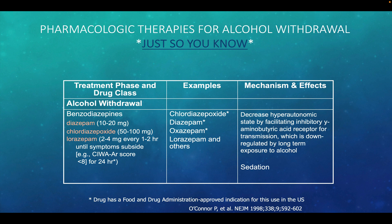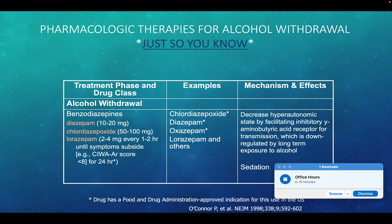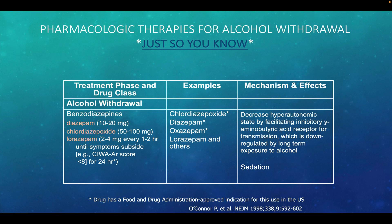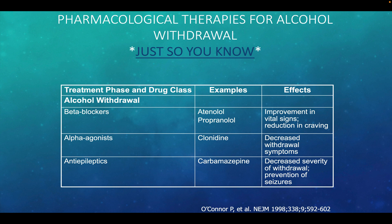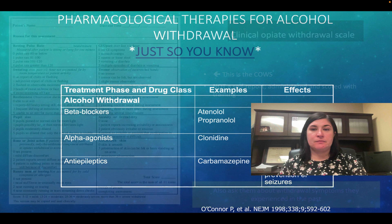These are some of the pharmacological therapies for alcohol withdrawal. Treatment phases for alcohol withdrawal might use benzodiazepines to decrease those hyperautonomic states or possibly put the patient into sedation. Other options could be beta blockers, alpha agonists, and anti-epileptics to help with those withdrawal symptoms.